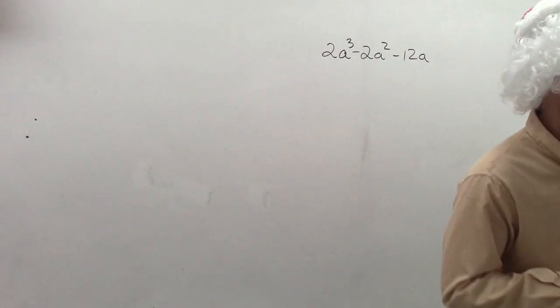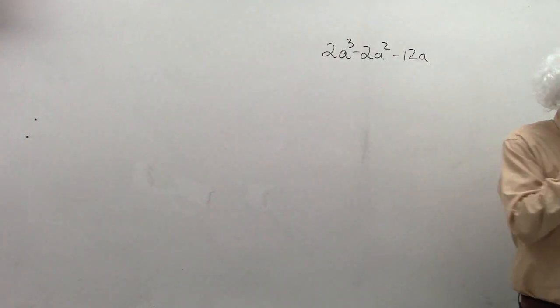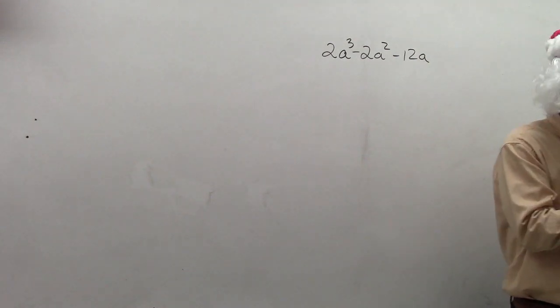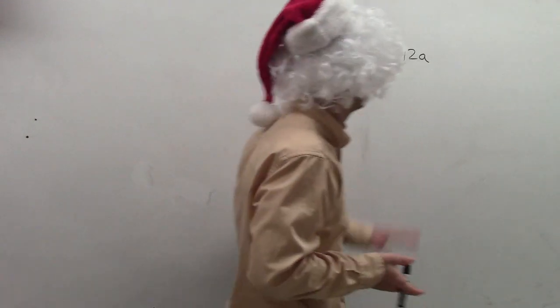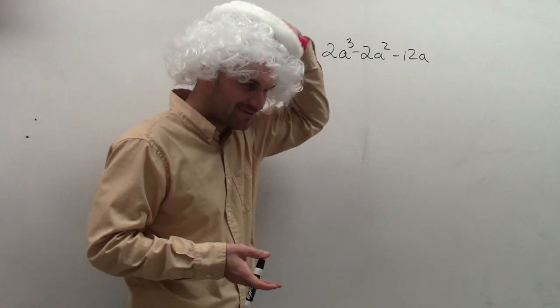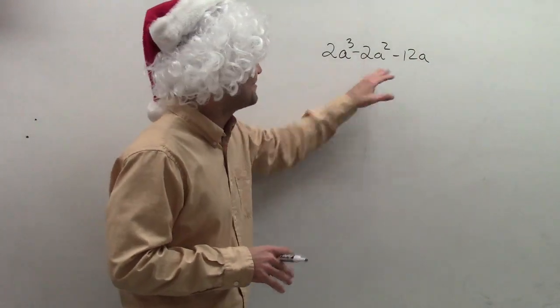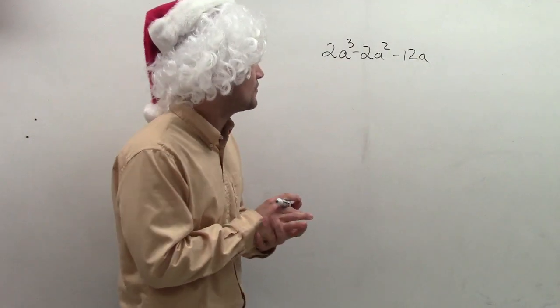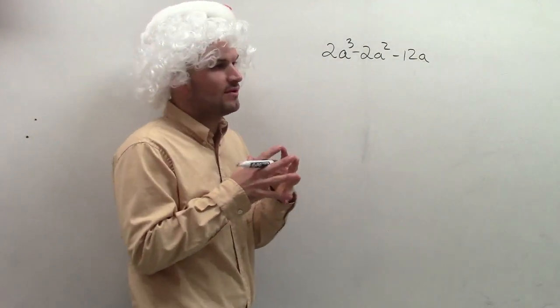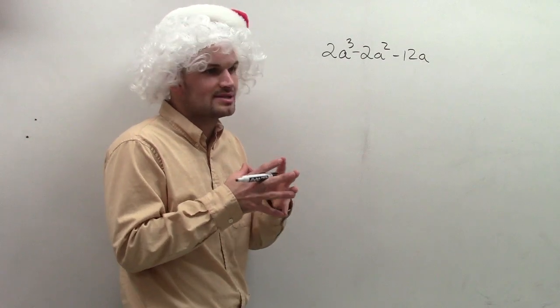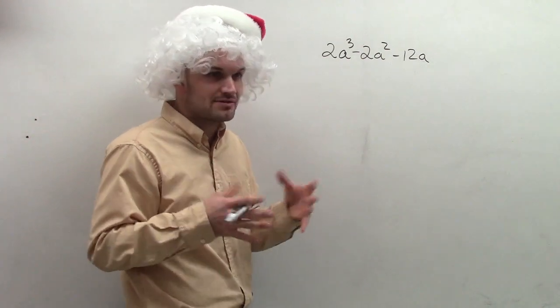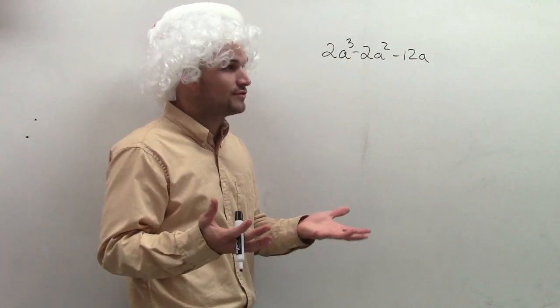So what we're going to look at for this problem is, remember, ladies and gentlemen, the first thing we want to do when we're trying to factor—we've practiced factoring trinomials and so forth—but the first thing we always want to look into is to see if there's something that we can pull out, or something that we can factor out, what we call the GCF.